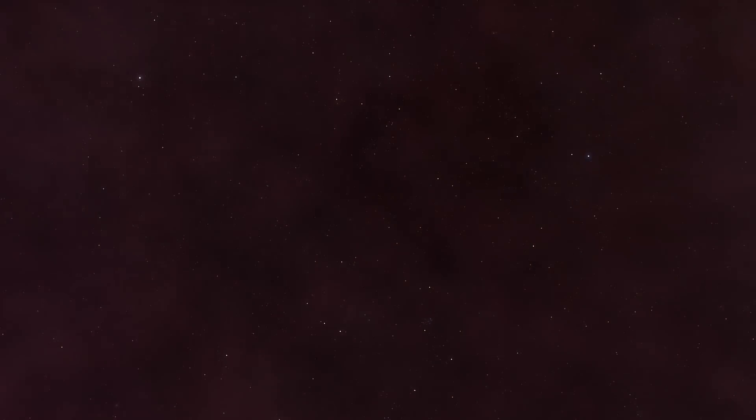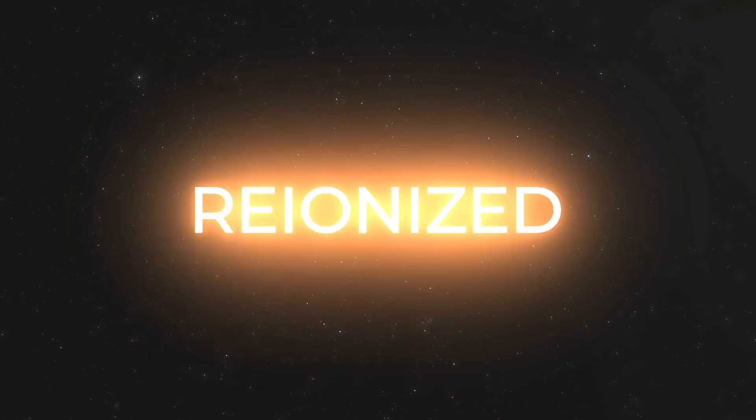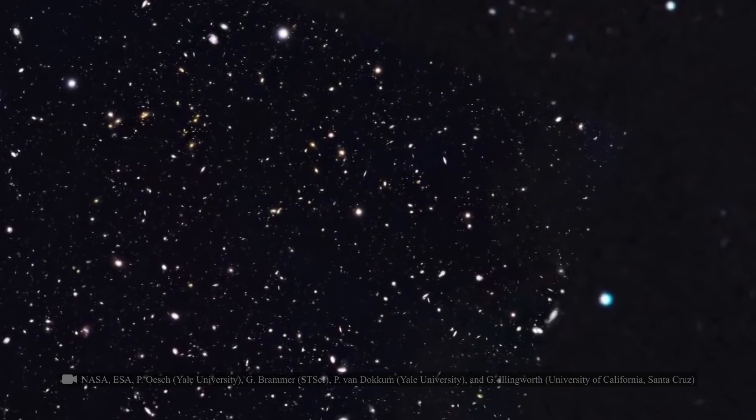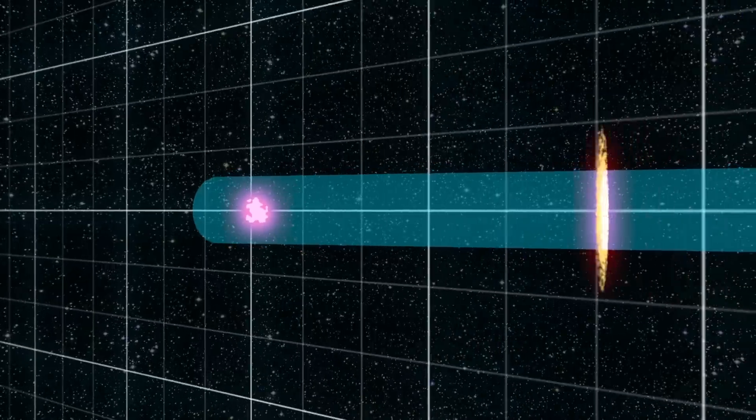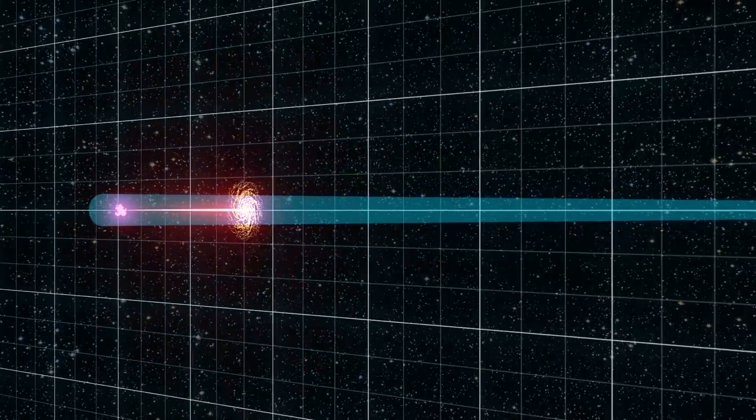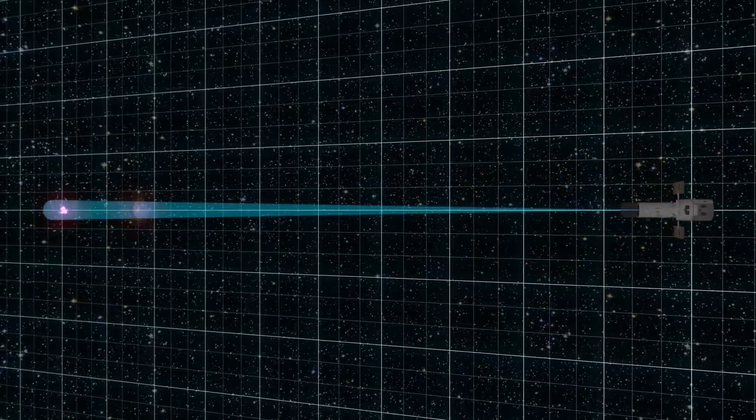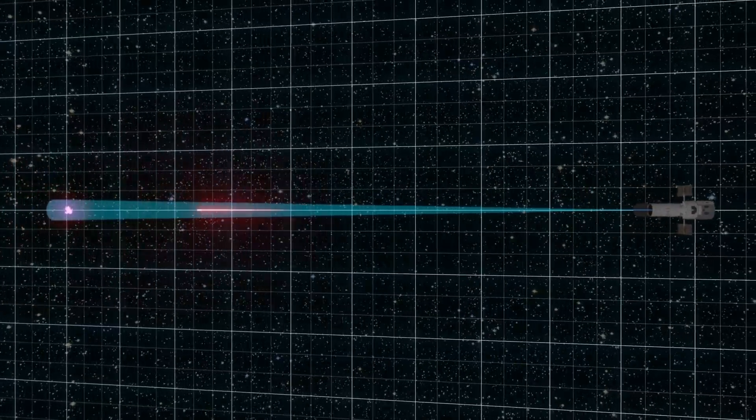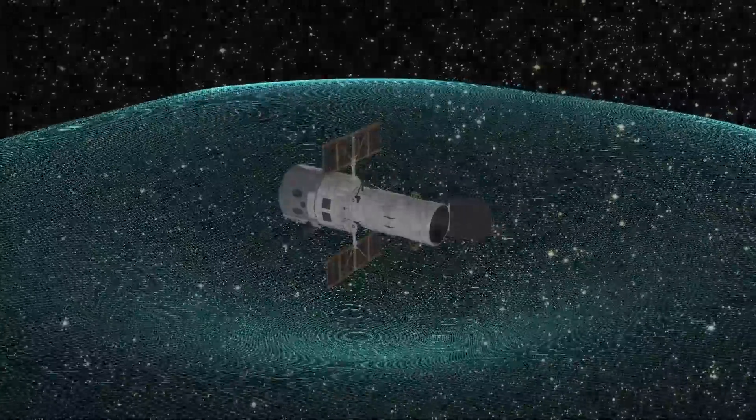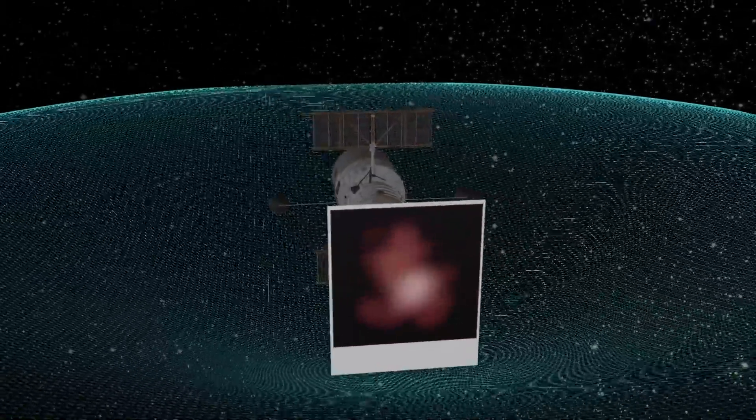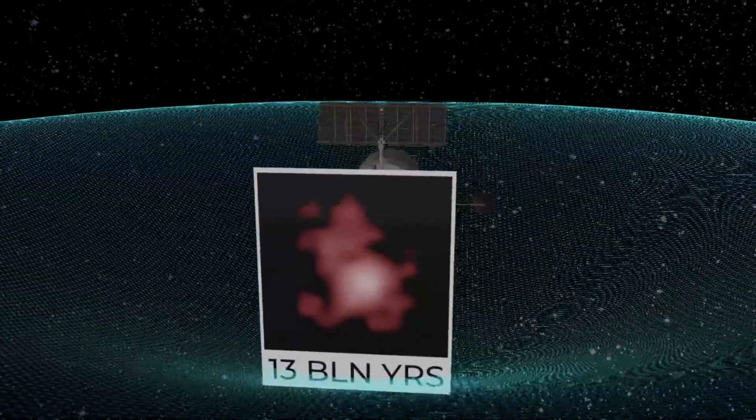It just so happens that GNZ 11 is located in an area where the intergalactic environment is mostly re-ionized. This helped the telescope take a fairly clear picture. Well, given the distance, of course. The light from GNZ 11 crossed another galaxy, which then acted as a huge lens. Without it, the light would have simply passed by and never reached the Hubble. But the gravitational pull did its job. And we now have a photograph of events more than 13 billion years ago.